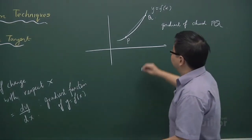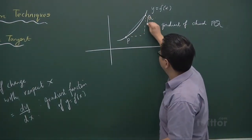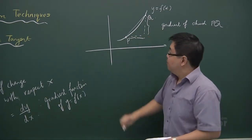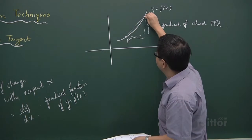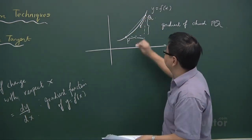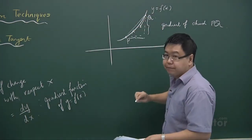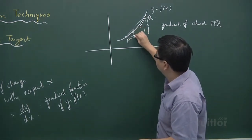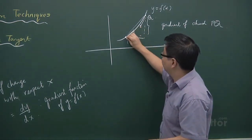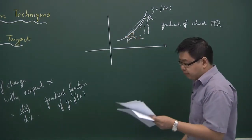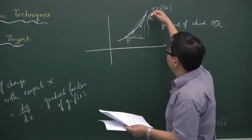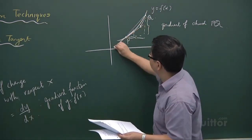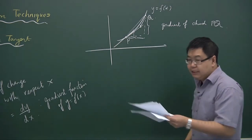And to find that, of course, you just have to find the difference in y over the difference in x. But as I move the q towards p to be a nearer point, then the gradient of this chord here becomes closer to the gradient at this point. In a limiting case, as you adjust the q towards p, we are actually finding the gradient of the tangent at the point p.